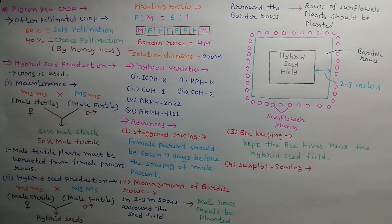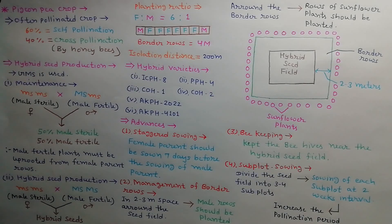Fourth is subplot sowing. Divide the whole seed field into 3-4 subplots. Now sowing in each subplot should be done at the interval of 2 weeks.